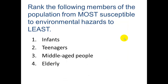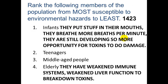Rank the following from most to least susceptible to environmental hazards. Infants are the most susceptible — they put things in their mouths, breathe more breaths per minute, and are still developing, giving toxins more opportunity to do damage. The elderly come in second place: they have weakened immune systems and weakened liver function, which is the main role of the liver — to break down toxins.